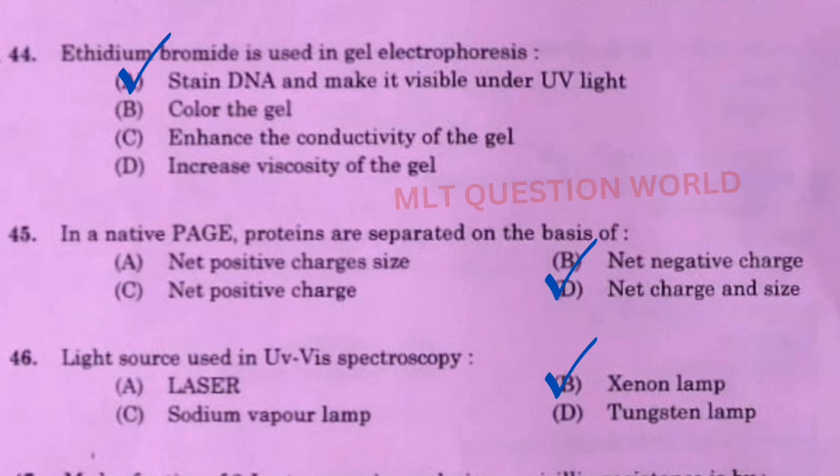Next question: Ethidium bromide is used in gel electrophoresis — the right answer is option A, to stain DNA and make it visible under UV light. Next question: In a native PAGE, proteins are separated on the basis of? The right answer is option D, net charge and size.